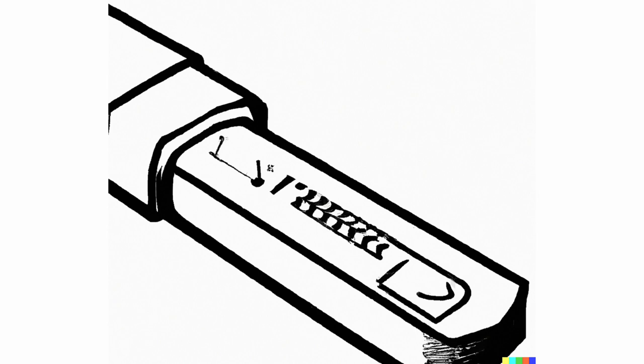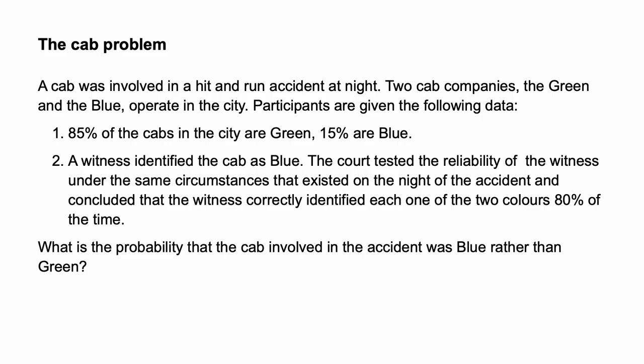Base rate neglect is the failure to consider an event's base rate when making a judgment. One illustration of base rate neglect comes from the cab problem from Tversky and Kahneman, 1982. It involves the following story.